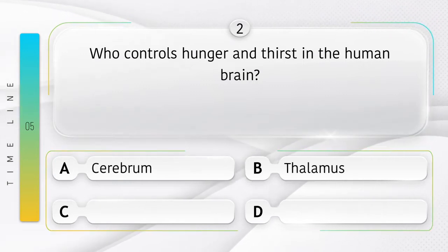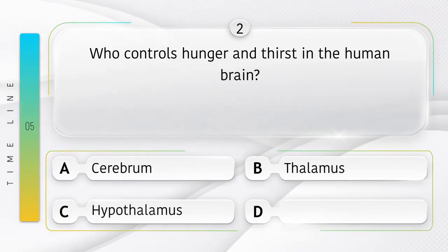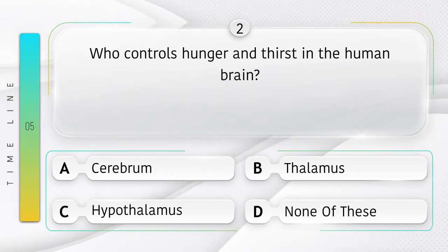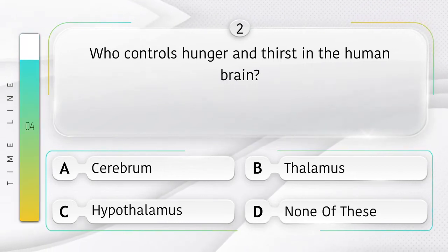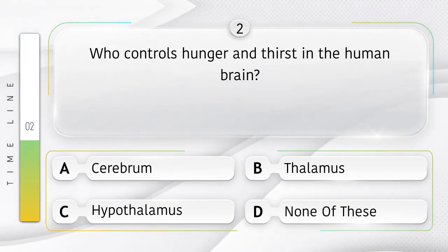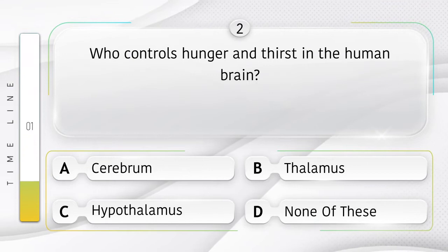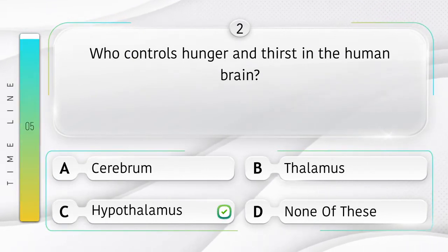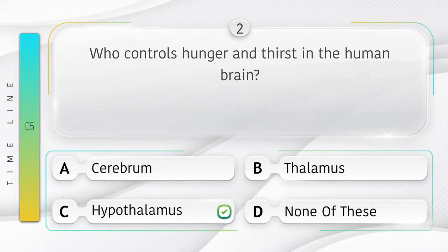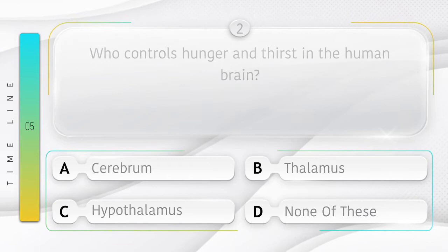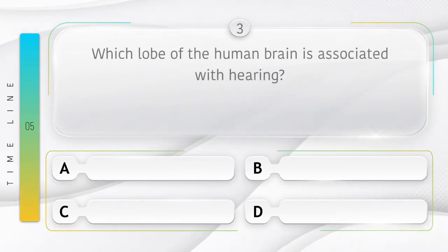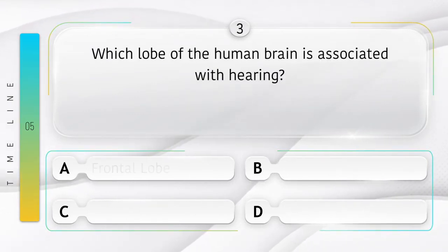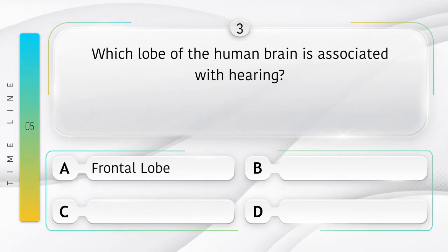Who controls hunger and thirst in the human brain? Option A: cerebrum, B: thalamus, C: hypothalamus, D: none of these. Answer is option C: hypothalamus.